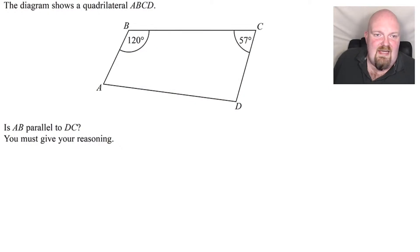Let's have a look at the question for today. The diagram shows a quadrilateral ABCD. Is AB parallel to DC? You must give your reasoning. So this is one that needs working out.